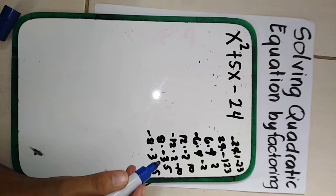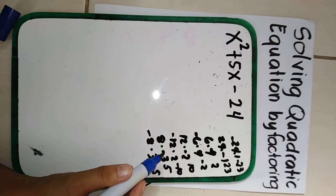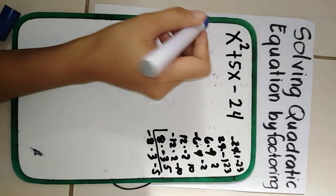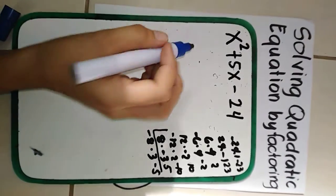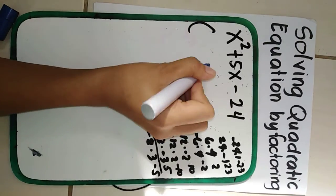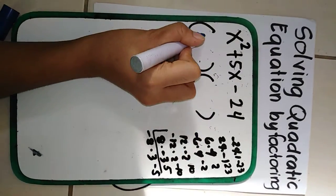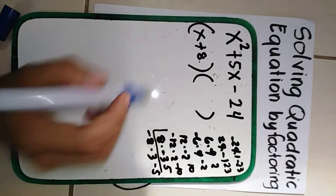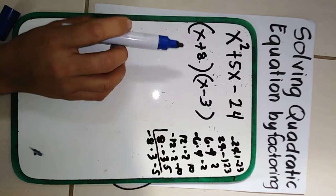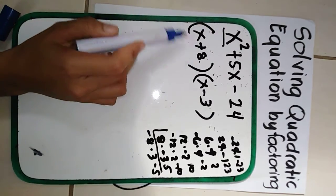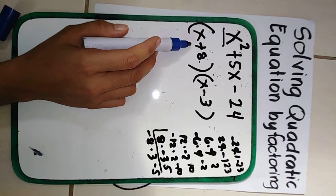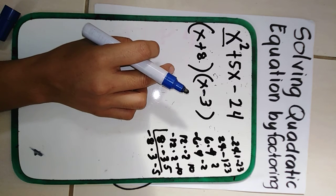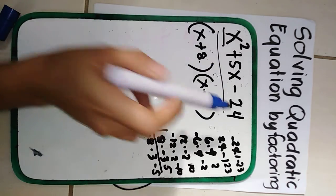The factor pair of negative 24 whose sum is positive 5 is 8 and negative 3. So we have our factors. Since 8 is positive, that gives us x plus 8, and negative 3 gives us x minus 3. The x comes from the first term: x times x, which is x squared. When we find the product of these binomials using the FOIL method, it equals x squared plus 5x minus 24.